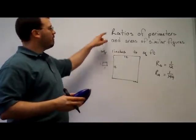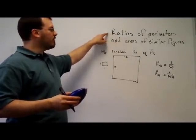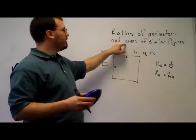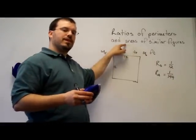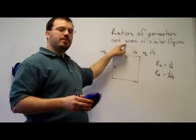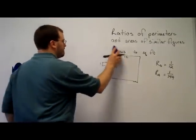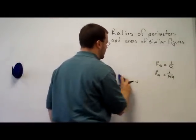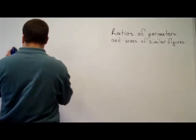So, in summary, the ratio of the perimeters is equal to the ratio of the sides, but the ratio of the areas for similar figures is equal to the ratio of sides squared. And for the heck of it, let's look at one more.